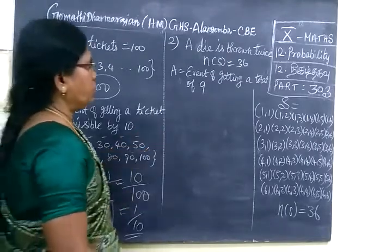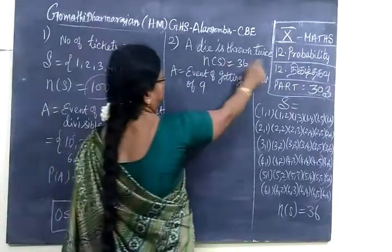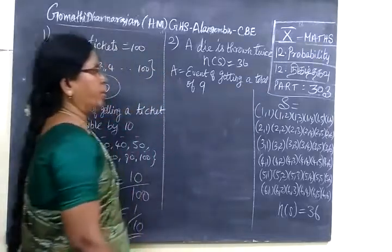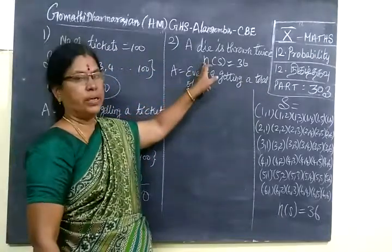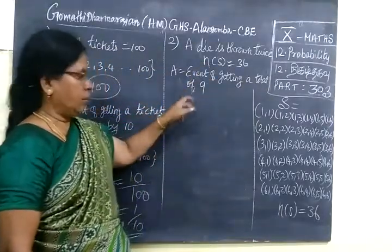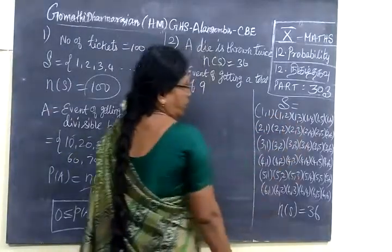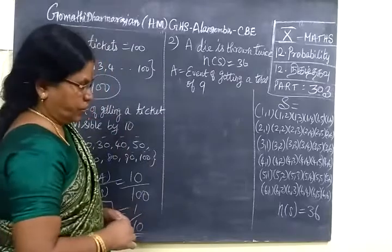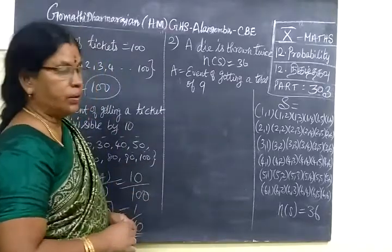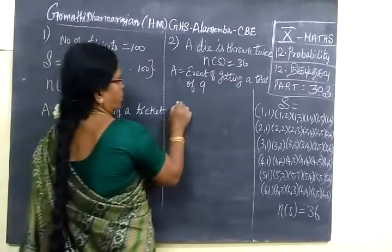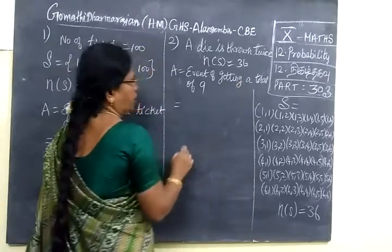And the next question we are having is a die is thrown twice, n(S) equal to 36. And you know that sample space 1,1, 1,2, already in the previous class it is given. So totally we are having 36.